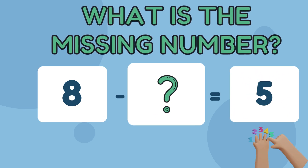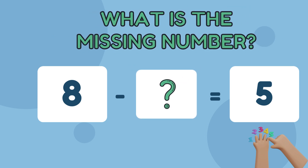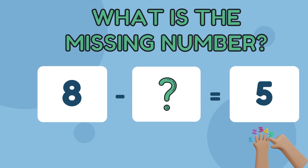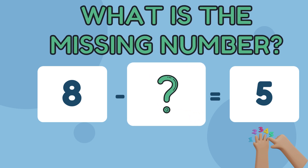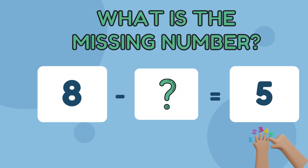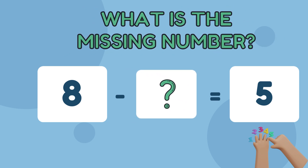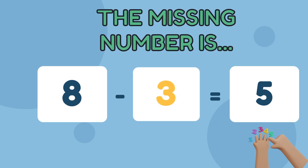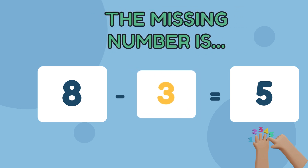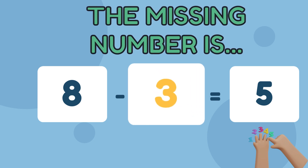Question 2. What's the missing number in this math quiz below? Easy, right? Yes, the missing number is 3. 8 minus 3 is equal to 5. Awesome.